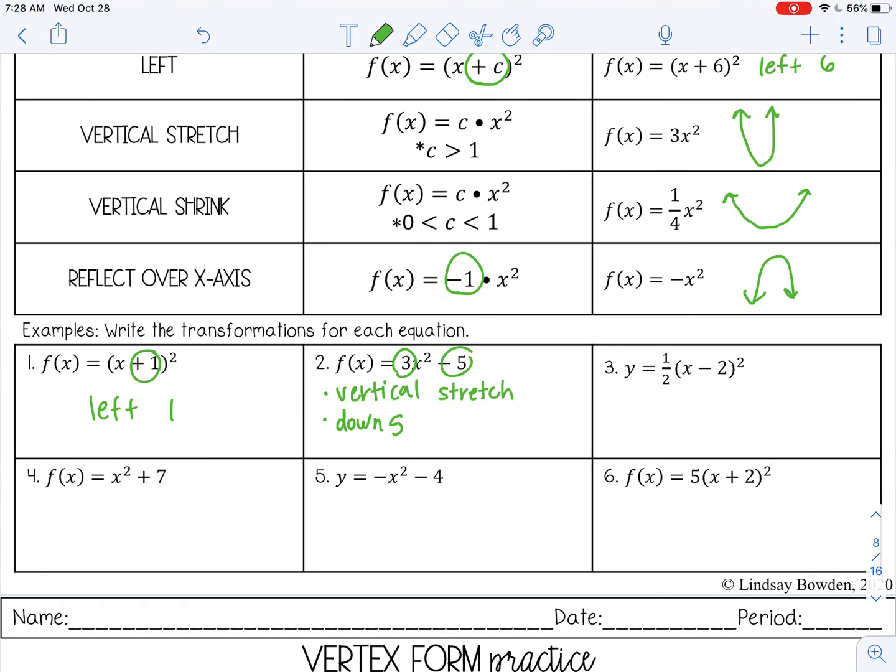Number 3, I have this vertical shrink. And notice I changed to y here. f of x and y are interchangeable. It just means the output of the function. And then I'm subtracting 2 inside parentheses. That moves it right 2.